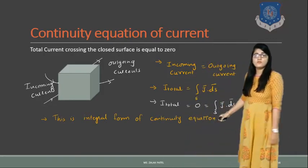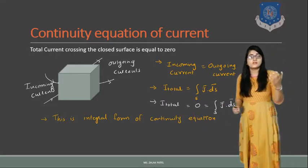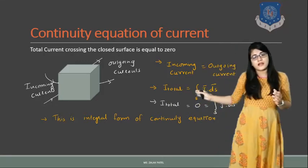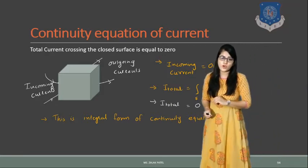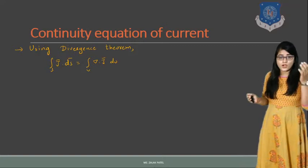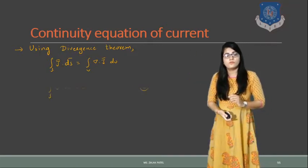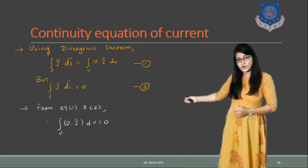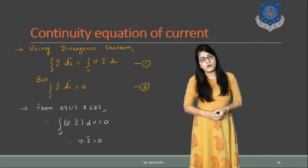To relate surface and volume, we apply the Divergence theorem: surface integration of J dS equals volume integration of del dot J dV. Since according to the continuity equation the total current is 0, the surface integration of J dS is also 0, so the volume integration of del dot J dV becomes 0. Therefore del dot J equals 0. This completes the continuity equation of current for the steady field.